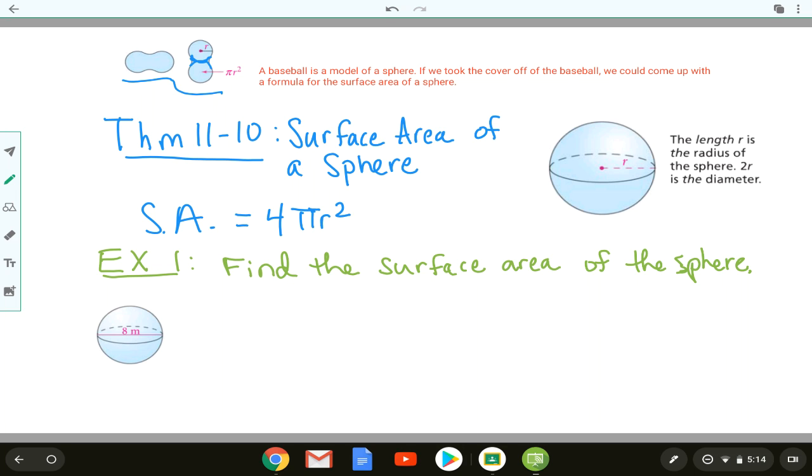Remember surface area on a prism or pyramid or cone is the lateral area plus the area of the bases, but in this case we have just a circular object. So the cover of the baseball is a good way to see where they come up with the surface area of a sphere in theorem 11-10. Anytime we're finding the surface area of the sphere we're just going to multiply 4 times π times the radius squared.